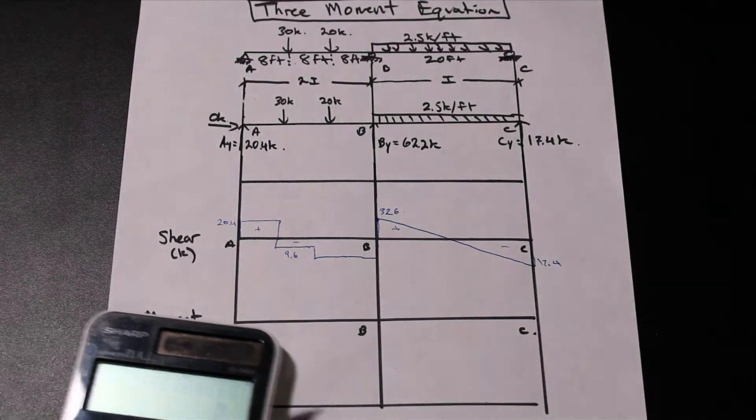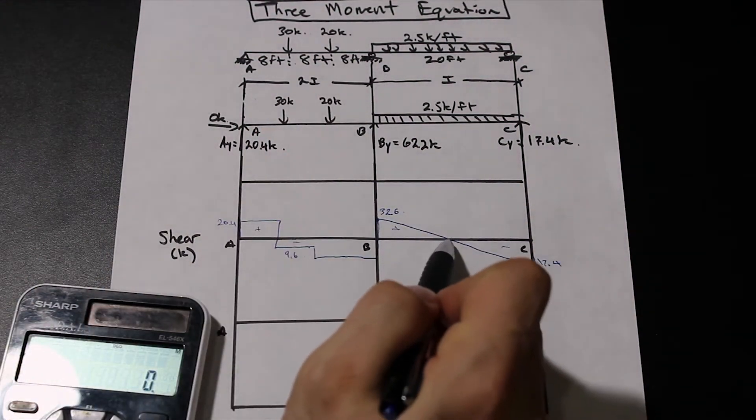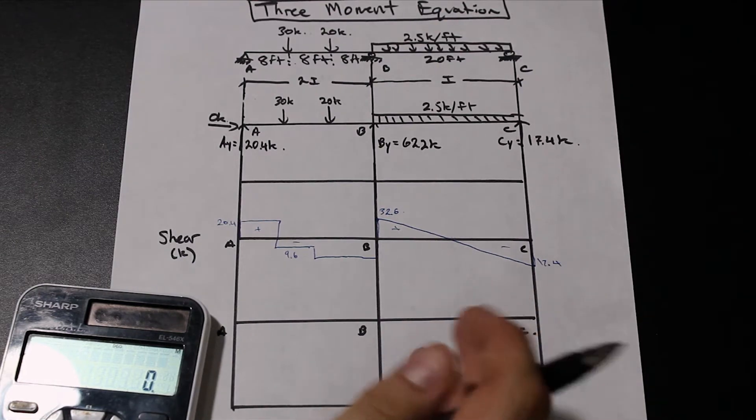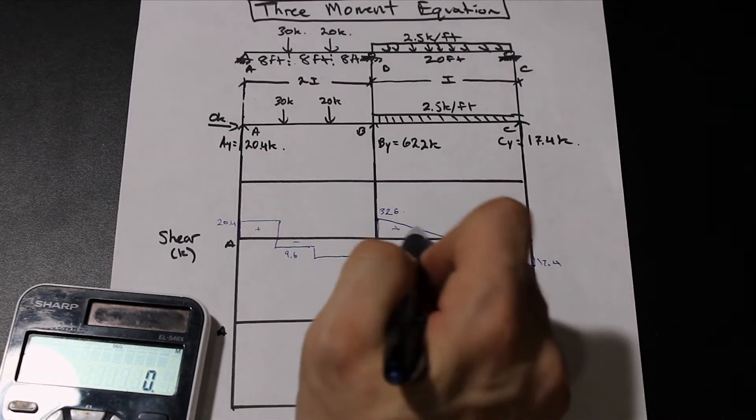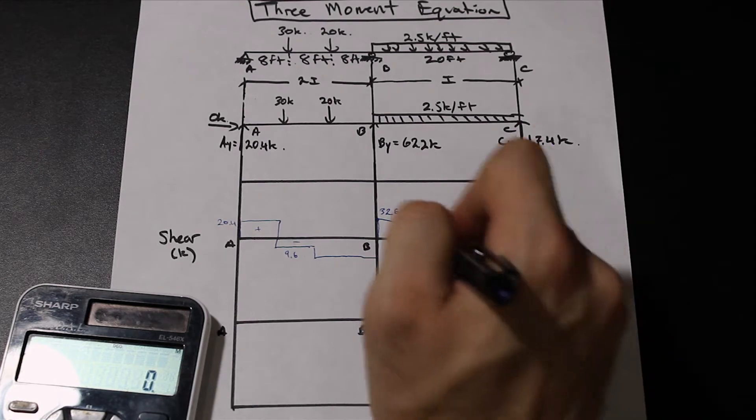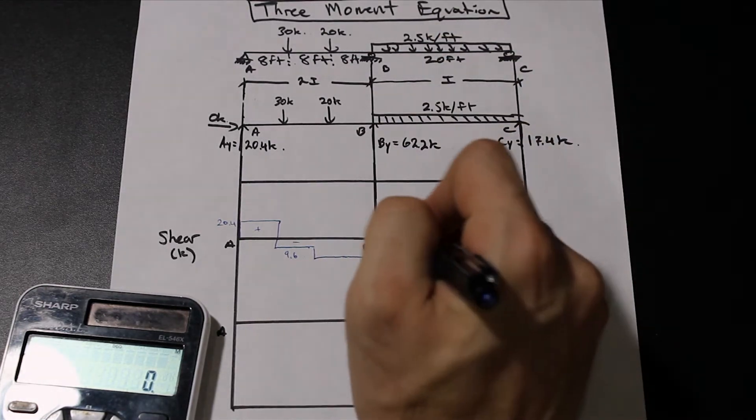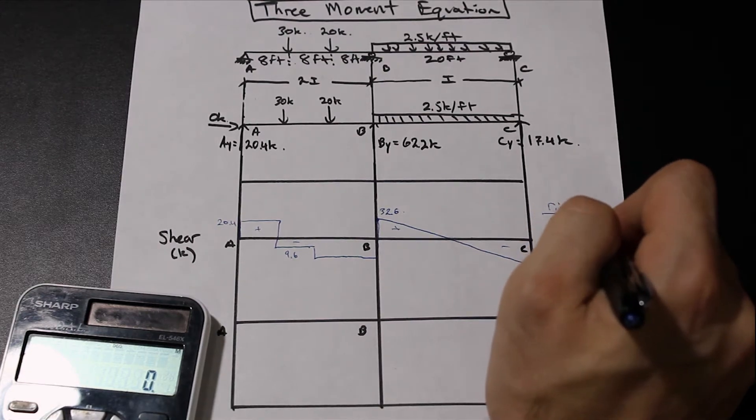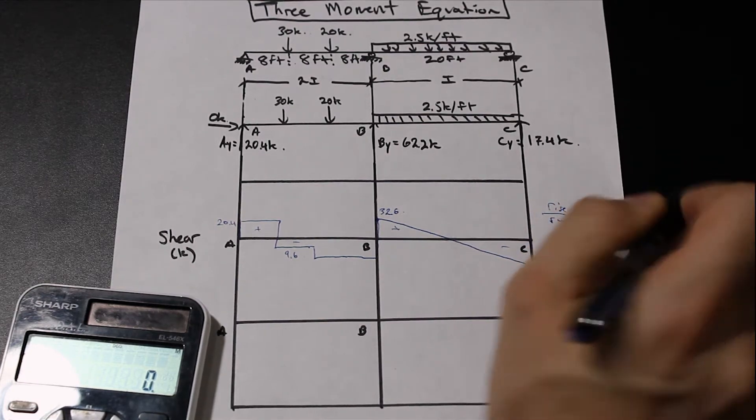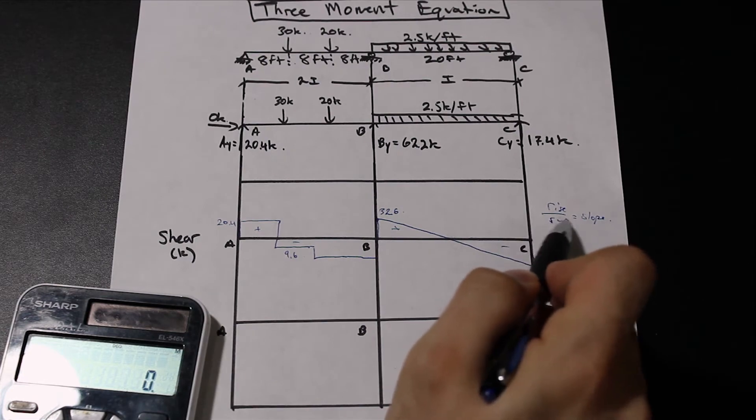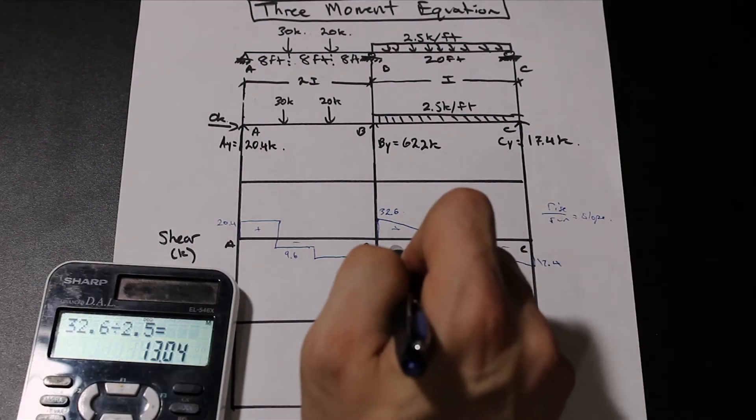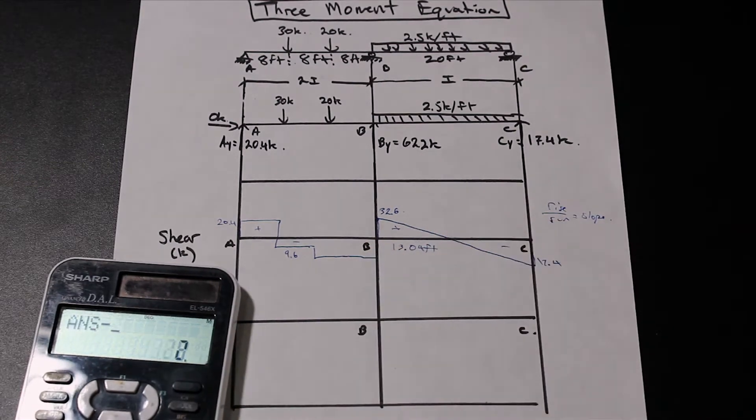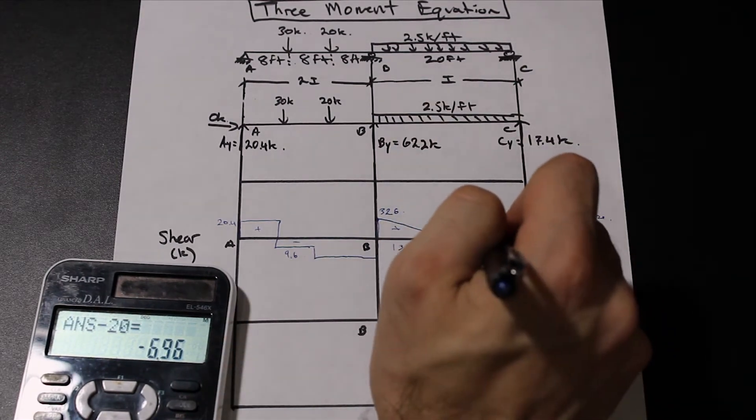So before we start, we're going to need to know where this point of zero shear is when we're drawing the bending moment diagram, because we want to label that spot. So let's go ahead and do that right off the bat. We know the slope of this line here is 2.5 kip per feet. We know that the rise over the run is the slope. So we need to solve for the run. Rise divided by slope, we're going to get this distance is 13.04 feet. Subtract 20, we get this is 6.96 feet up to this point.